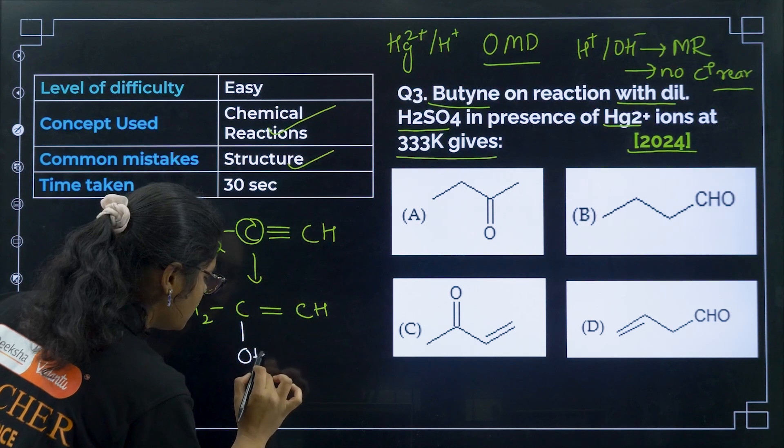Question 21 from 2019: which compound undergoes the haloform reaction? For the haloform reaction, the CH₃CO group must be present. Looking at the options, this group is present only in option A. So option number A is the correct answer.